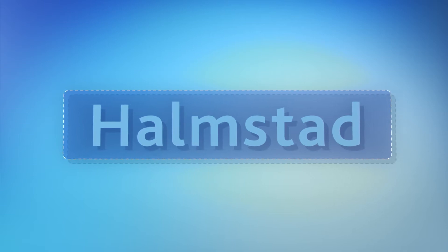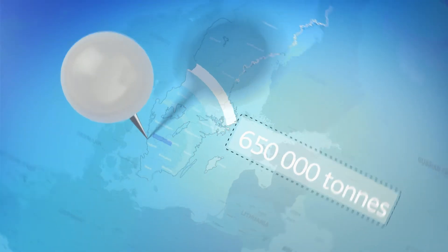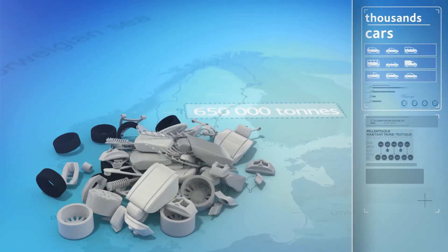In Holmstad, in western Sweden, at this site, Stiena already returns more than 600,000 tons of useful raw material back into circulation annually.